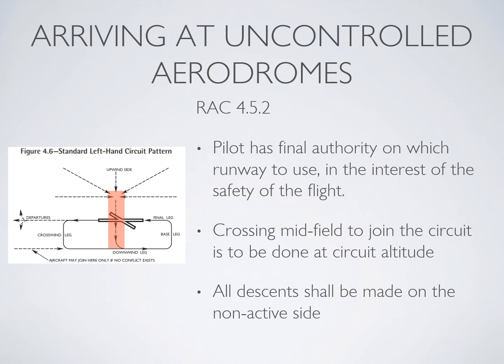Now, if there is no other conflict and you can be absolutely sure there is not going to be any kind of conflict, pilots can actually join directly onto the downwind at an uncontrolled airport. However, usually crossing midfield is how it is done. Remember that all descents shall be made on the non-active side.